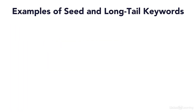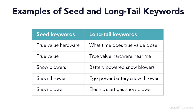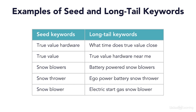Let's look at some keyword examples. When a person is looking for snowblowers, they could be searching for how much do snowblowers cost, how do snowblowers work, or any number of things. But when somebody searches for battery-powered snowblowers — a long tail keyword — you know they've already done some research and know they're interested in battery-powered snowblowers, not gas-powered.